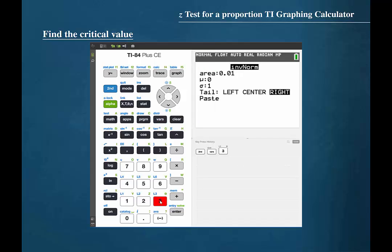At the prompt for the area, we will input the level of significance. That was 0.05. Make sure that the mean is set to 0 and the standard deviation is set to 1. Use the cursor to select which tail the specified area is in. In this case, it is a right-tailed test, so we will cursor over to right and press enter.